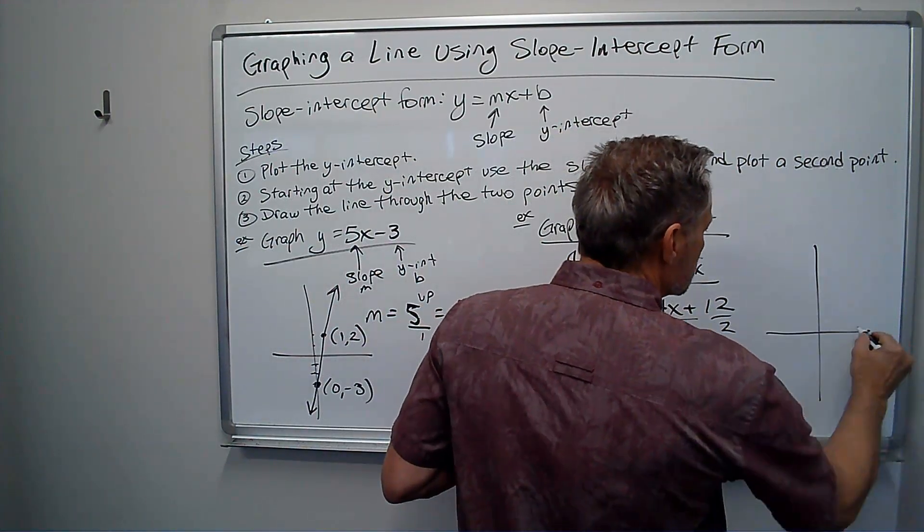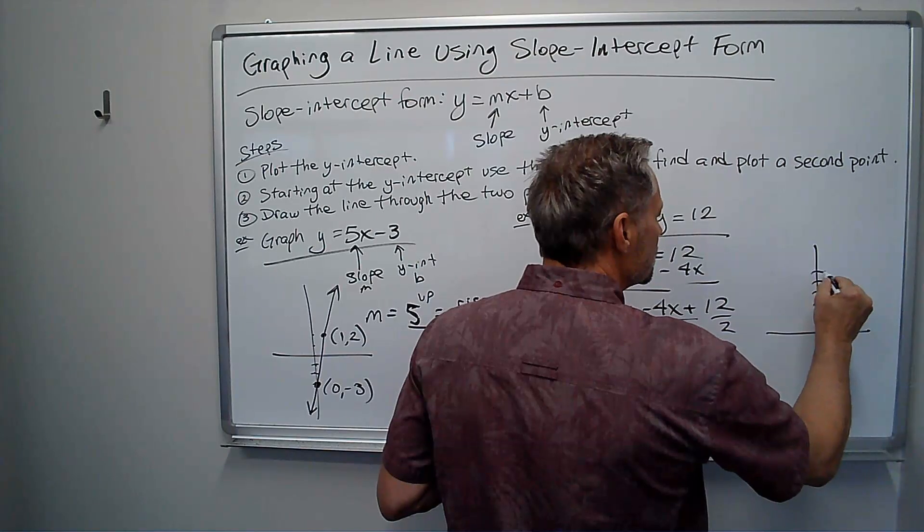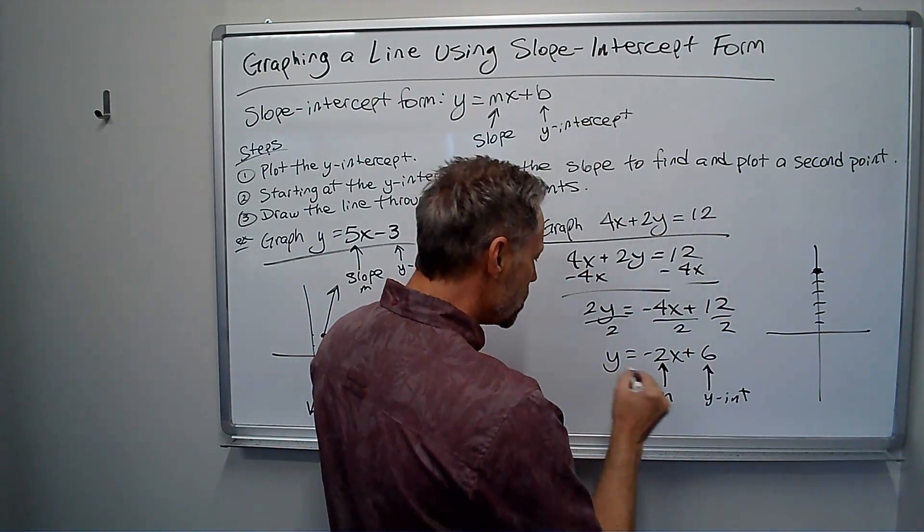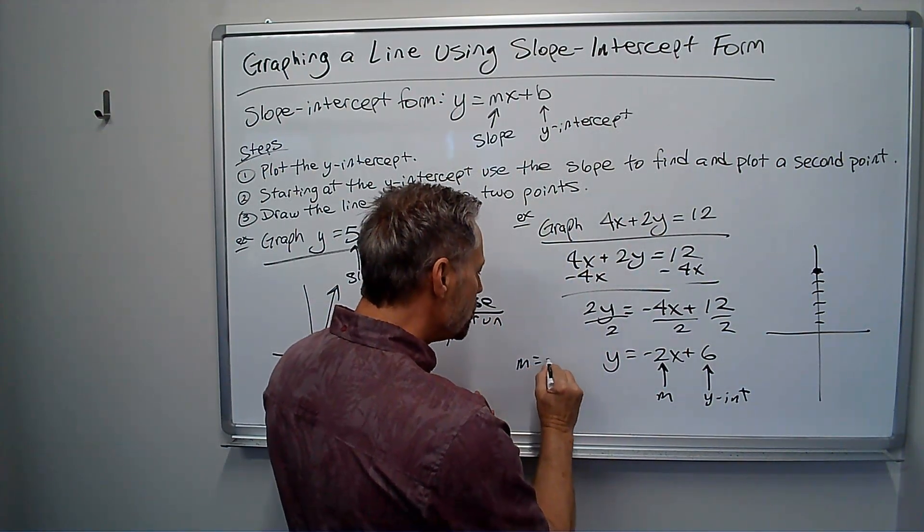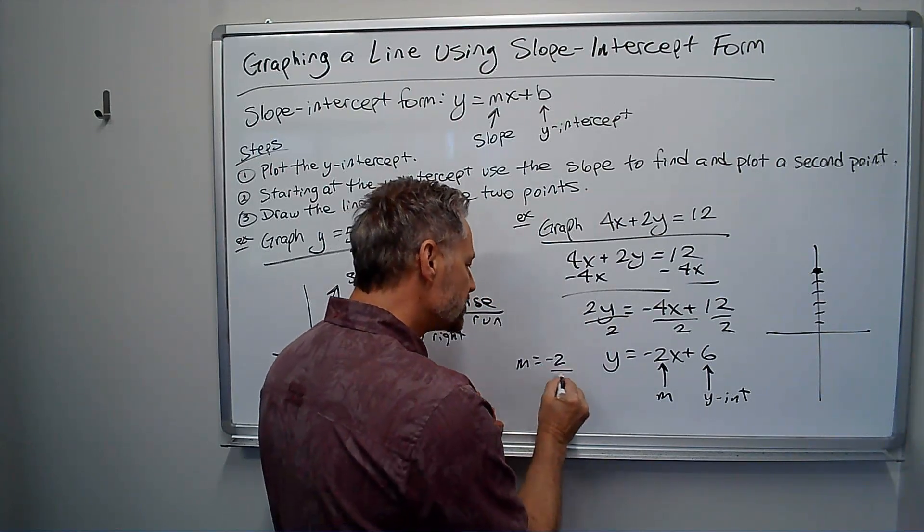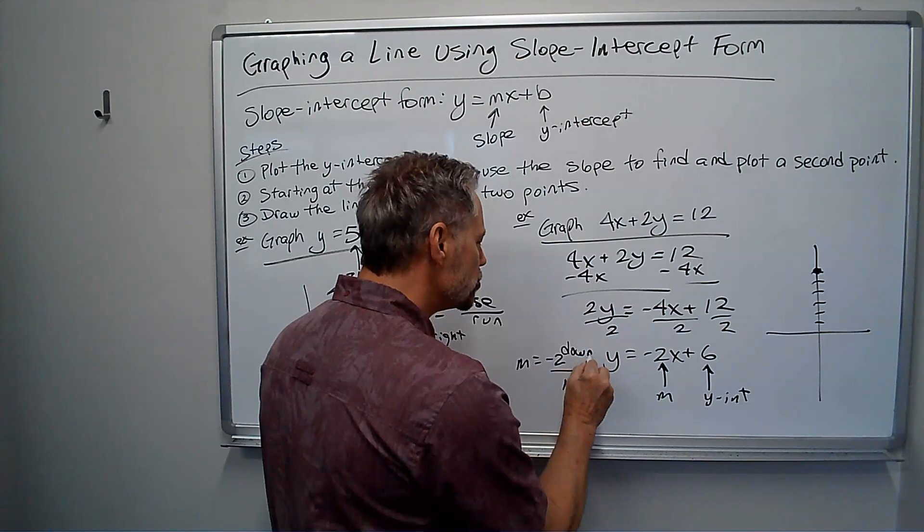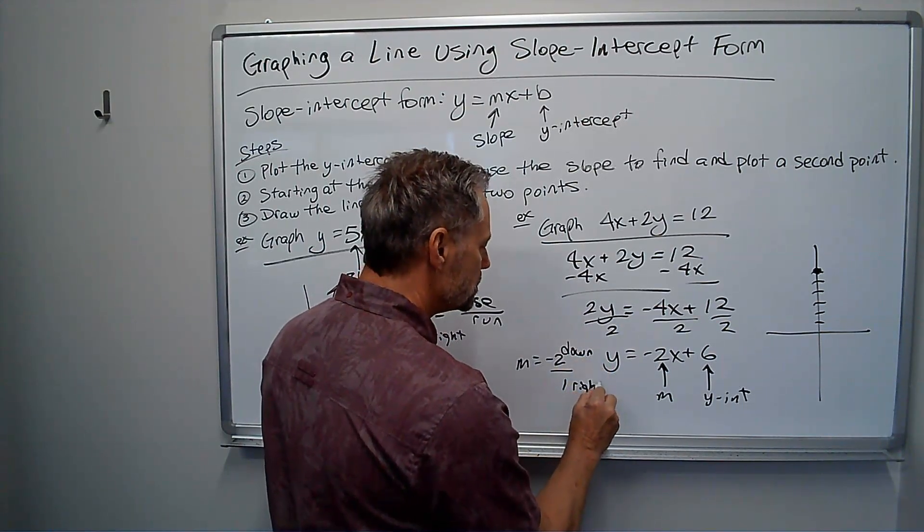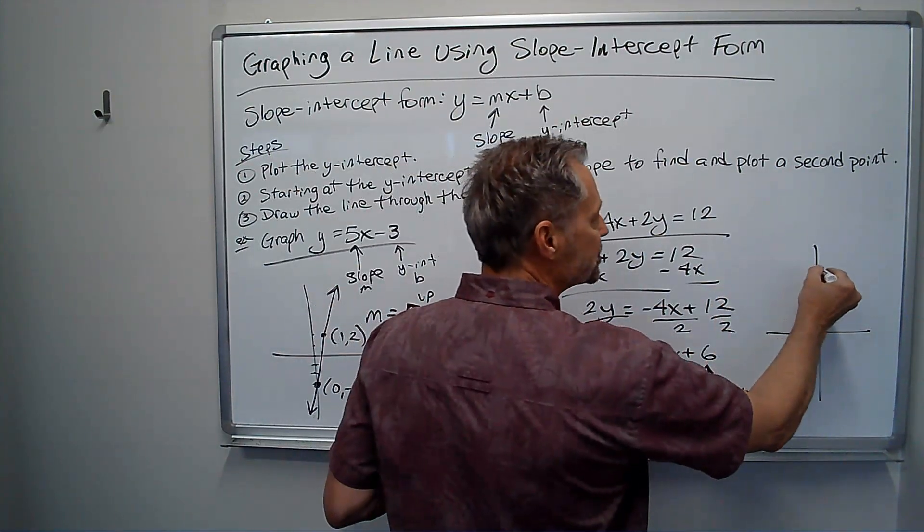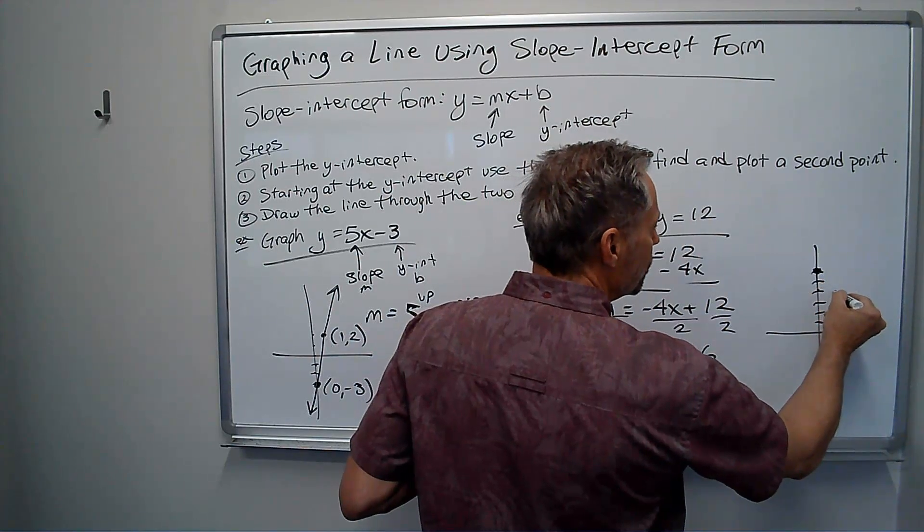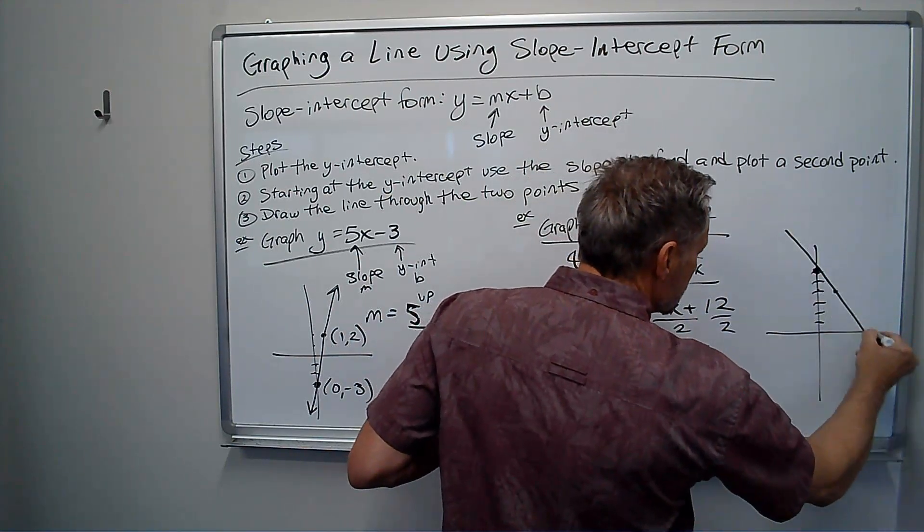So now when I do it, I start at 6, my y-intercept. Again, slope-wise it's negative 2. Think of it as a fraction, negative 2 over 1. This time I go down 2 and right 1 from the y-intercept. I go down 2, right 1. That's my line.